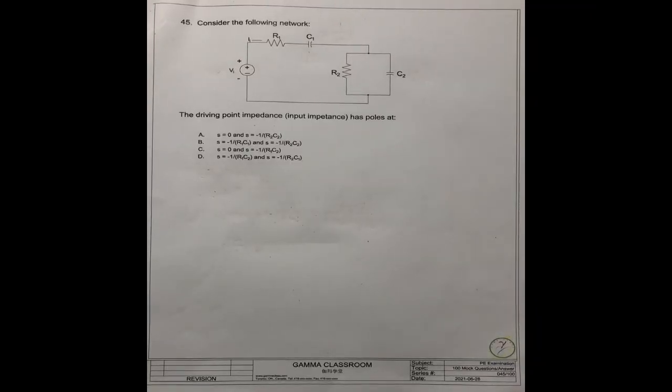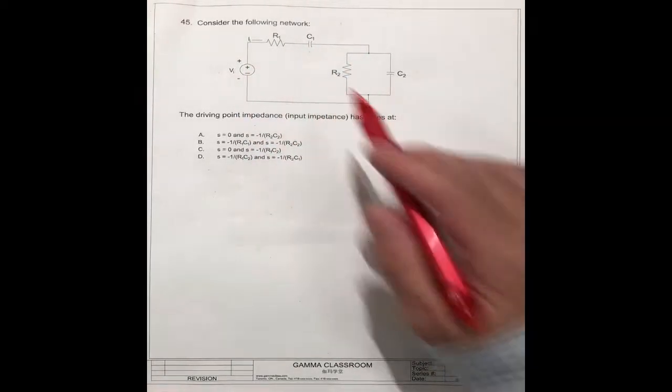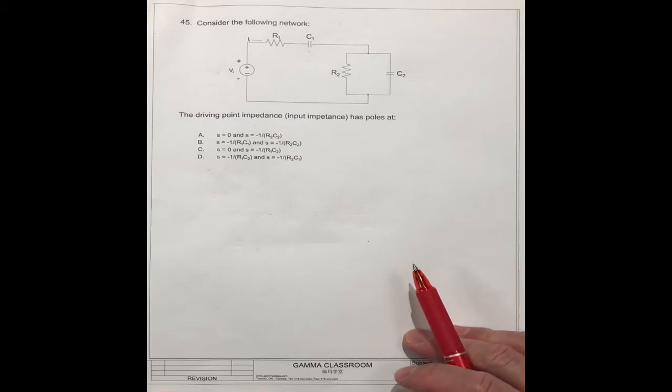Question 45, consider the following network. This network, the driving point impedance (input impedance) has poles at A, B, C, or D.